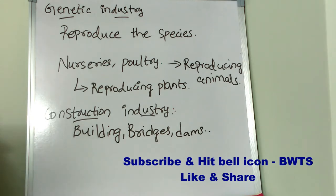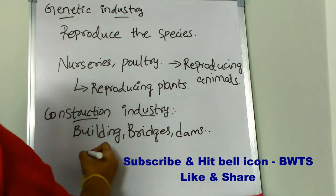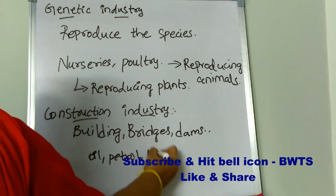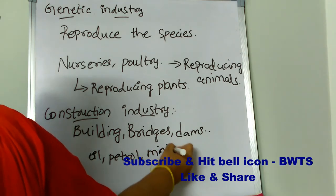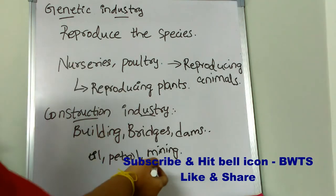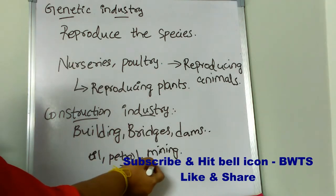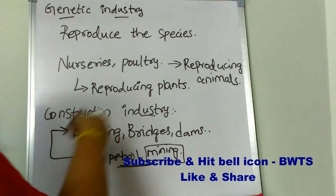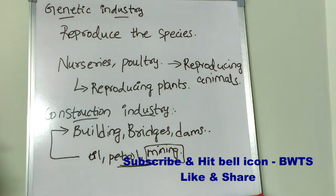Extractive industries produce oil, petrol, and mines, and these outputs are used as raw materials to construct buildings, bridges, and dams. The outputs of the extractive industry are used as inputs for the construction industry.